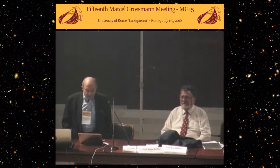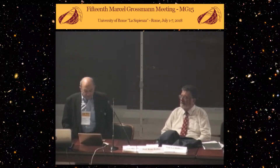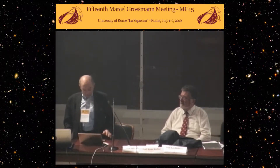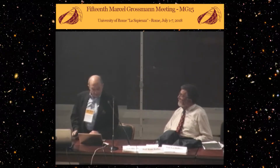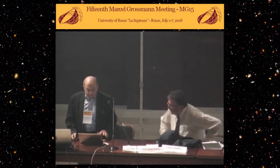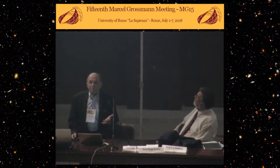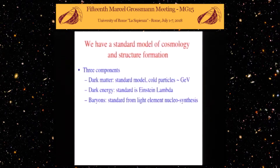The topic is ultralight scalar field cosmological dark matter, and it's the explanation for small-scale structure. You've all heard about large-scale structure — this is small-scale structure. We have by now a standard model of cosmology and structure formation with three components. Pardon me for talking about very obvious astrophysics, but many of the students and postdocs here are general relativists and don't know all these details.